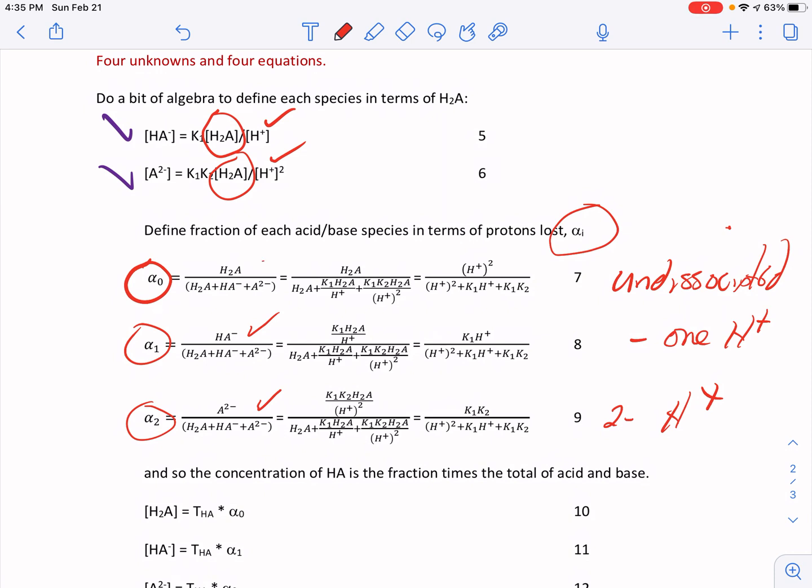So my algebra now follows. Here's my basic ratio. My algebra now follows in terms of H2A in the numerator. And then my denominator is going to be H2A plus A2-. But I'm going to use HA-. And that comes in right there. And then this comes in right there. And now you know why I solved everything in terms of H2A because the H2As cancel. There, there, there, there, and there. And I end up with my final expression, which is H+ squared over H+ squared plus K1 H+ plus K1 K2.